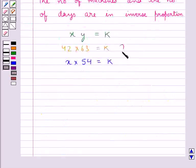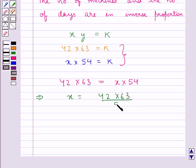From these two relations we get 42 multiplied by 63 is equal to x multiplied by 54. So from here we get x is equal to 42 multiplied by 63 divided by 54.